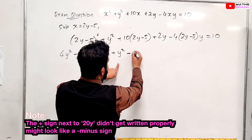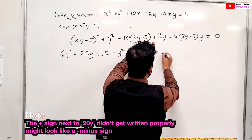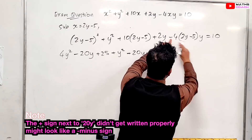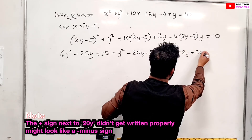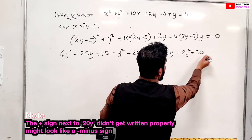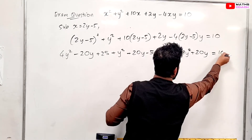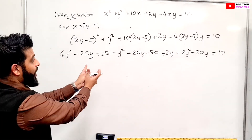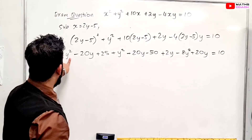Expanding (2y - 5)² gives 4y² - 20y + 25. Plus y². Then 10(2y - 5) gives 20y - 50. Then plus 2y. Then -4(2y - 5)·y expands to -8y² plus 20y. And we have our 10 on the right-hand side.